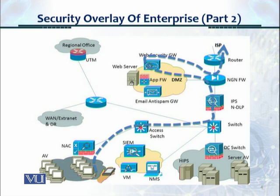The third traffic flow is traffic directed out of the organization. This is a user sitting inside who is trying to access a website outside in the World Wide Web. The user's traffic is directed to the access switch, distribution switch, goes out to the NGN firewall, goes to the DMZ web security gateway which acts as a proxy, and then out to the ISP. The reverse traffic would go in exactly the same sequence back in the same route.